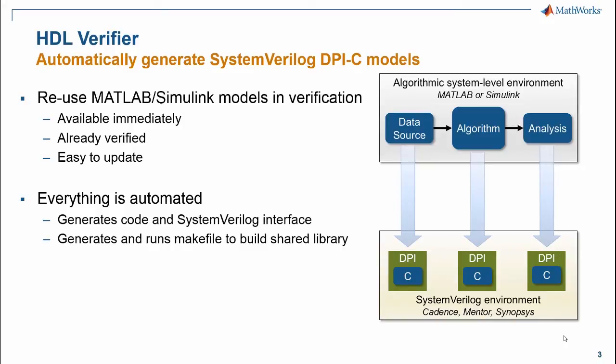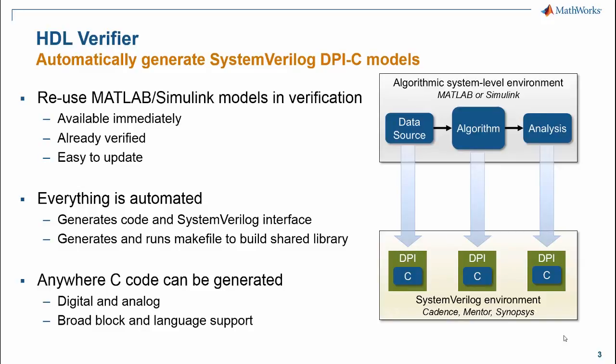HDL Verifier generates everything needed to build the DPI-C component and will also execute the make file to build the shared library. This works for any model that the MathWorks coder products can generate C for. So you can model most anything you need from digital to analog or any mixture of the two, and it will run much faster because it's behavioral compiled C.